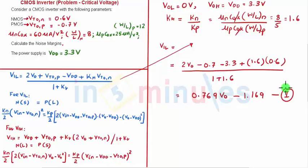So we got VIL in terms of V out. We'll substitute this VIL which is nothing but VIN in this equation. So basically in this equation for VIL when NMOS is in saturation and PMOS is in linear, we'll substitute VIN equal to VIL which is equal to 0.769 V out minus 1.169 and we'll solve the quadratic equation.